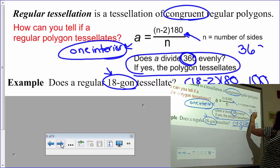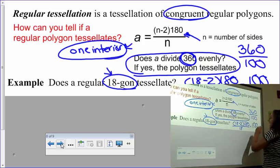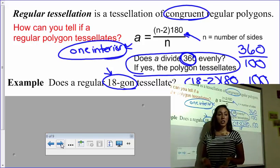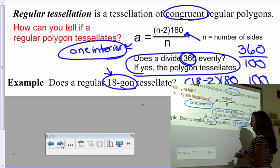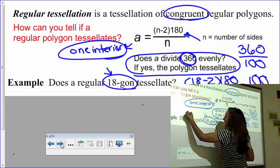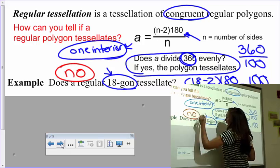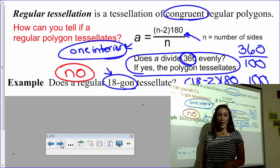When you do that, you should come up with the number of 160. So that's what each interior angle of an 18-gon equals. Now we have to check the 360 part. So if you do 360 divided by 160, does that divide evenly? What type of number do you get? Do you get a whole number or do you get a decimal? Well, 360 divided by 160 does not give you a whole number. So in this instance, no, a regular 18-gon will not tessellate.